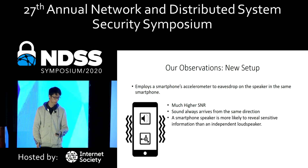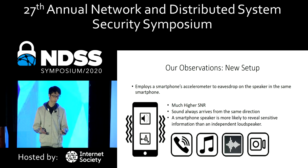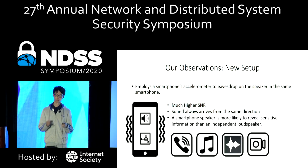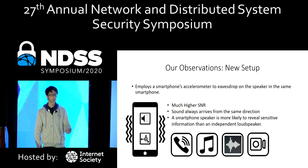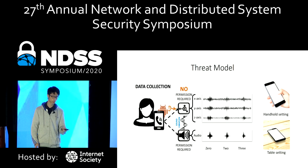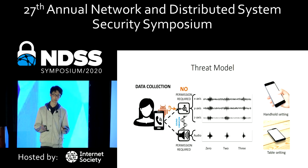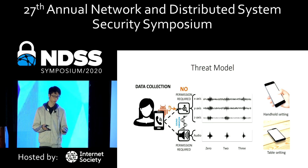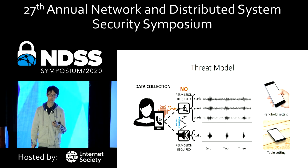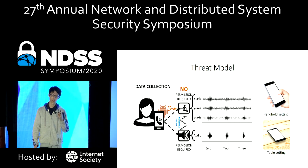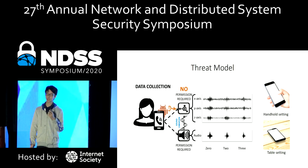A smartphone speaker is much more likely to reveal private information than an independent loudspeaker. For example, the attacker can overhear the user's phone call, or overhear the user's voice memo, or infer the user's music or video preferences. Based on our observation, we propose this new type of side-channel attack. In this threat model, a victim user plays some voice signal using the smartphone speaker. Meanwhile, the attacker executes a spy app running in the background that continuously collects accelerometer data, then tries to extract private information from that data. The smartphone can be either placed on a table or held in the victim's hand.